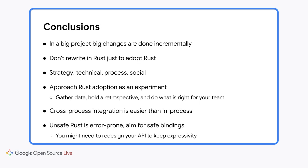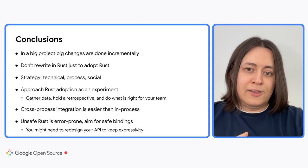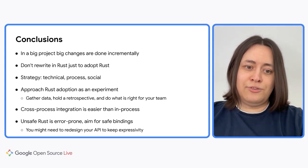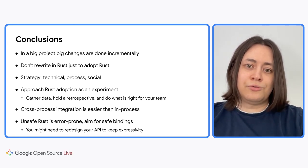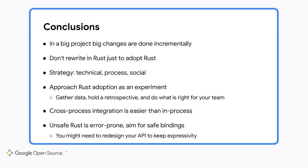Let's summarize. In a big project, big changes can only be done incrementally. You shouldn't rewrite in Rust just to adopt Rust — you need a much stronger justification. Think about the technical, process, and social components of your Rust adoption strategy. Approach Rust adoption as an experiment: start with a small team, gather data, hold a retrospective, and decide what to do based on your team's and leadership's response. Do what is right for your team. It is easier to start using Rust by adding a new binary to the project. If you must use in-process integration, you should aim to provide safe bindings for your non-Rust code — though you may need to redesign some APIs to preserve expressivity, and you need to budget extra time for that.